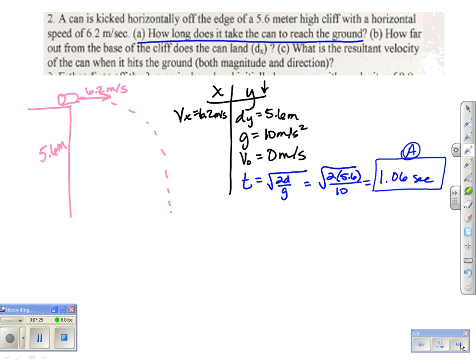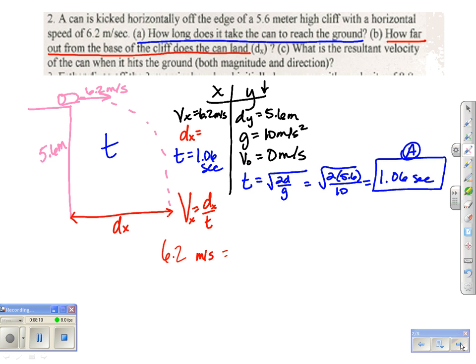Now, b wants me to find out how far out from the base of the cliff did it land. So for a, I just found this, but for b, they want me to find this, which is my dx. I don't know how far out did it land. So I want to find dx. Well, the good thing is, is I know time. And so if I know time in the y, I also know it in the x, because this is just one piece of the triangle, so they are the same. I remember that I can only use v equals d over t on this side. So if that's the case, I have 6.2 meters per second equals my dx that I want to solve for in my 1.06 seconds. So we will cross multiply and cancel out the seconds. So my dx will be 6.57 meters. So that is b.